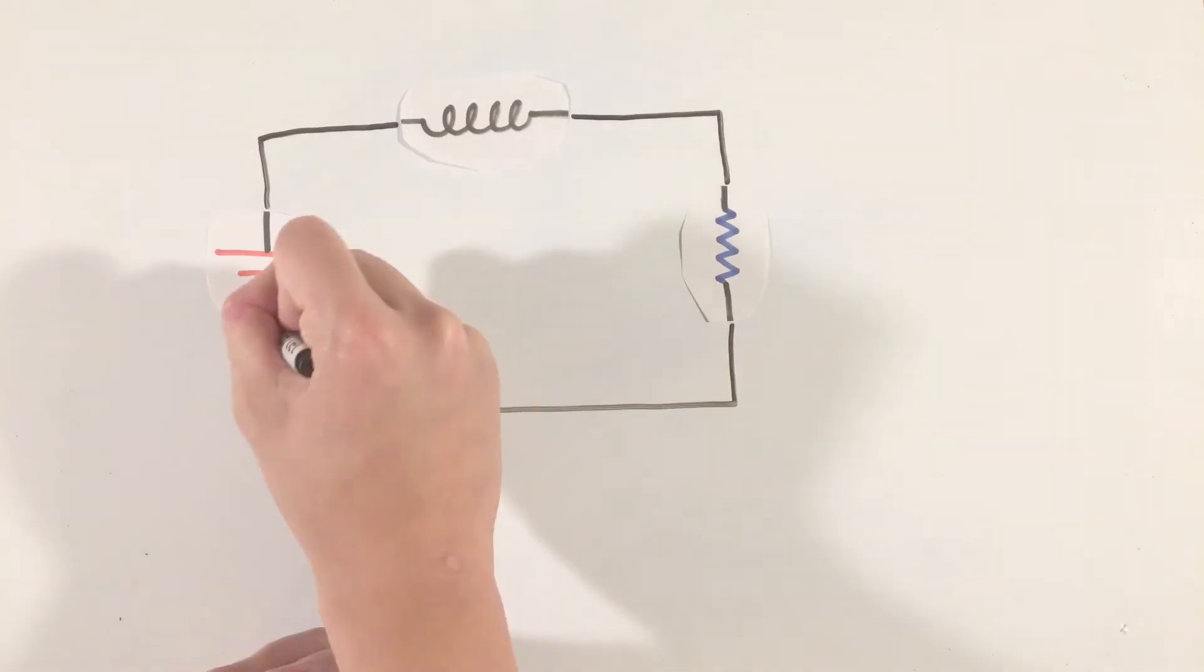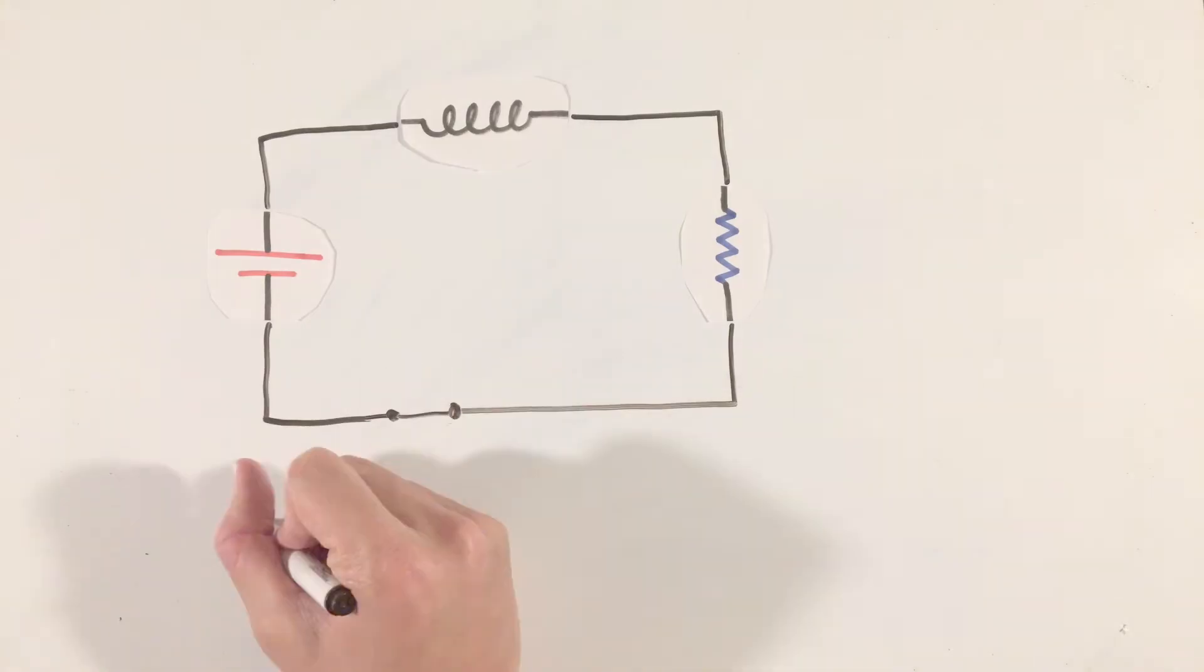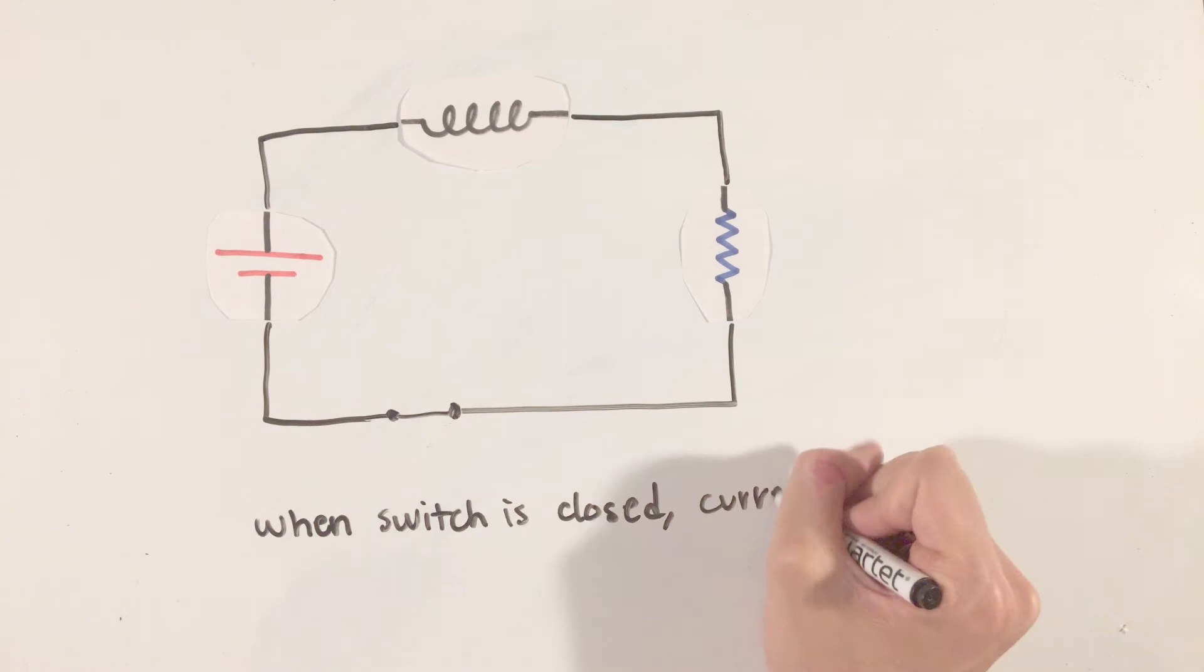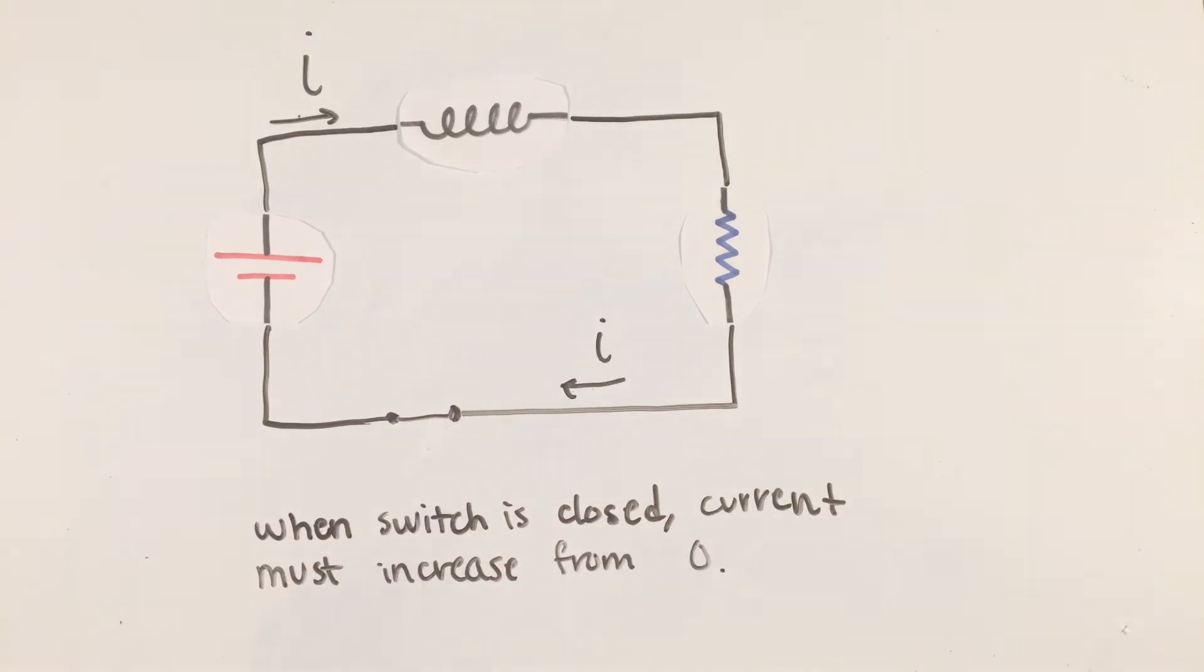But how does this inductor function within a circuit? Well, the basic idea of inductors is they operate on Faraday's law. When you flip a switch on in a circuit consisting of, say, a battery, inductor, and a resistor, the current obviously starts at zero, and has to increase to reach a steady state of current value.